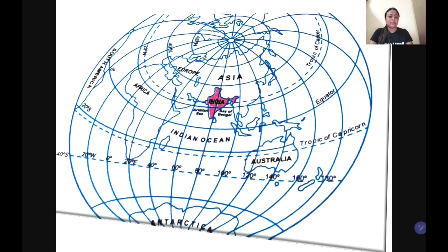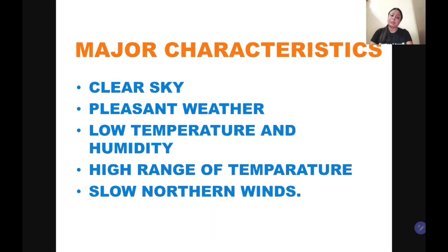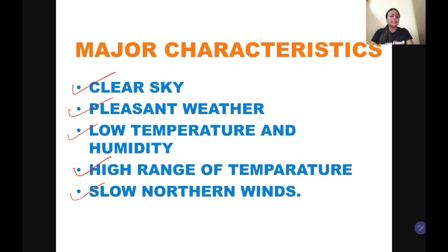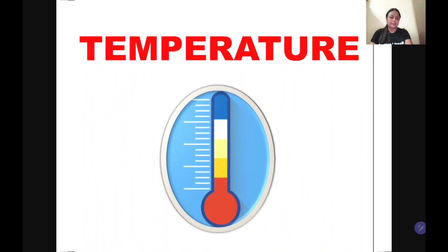If you see the location, India is in the northern hemisphere, and the Tropic of Cancer is passing through it. We experience winter when the northern hemisphere is away from the sun. The characteristics of the cold weather season are: clear sky, pleasant weather, low temperature, low humidity, high range of temperature, and slow northerly winds.